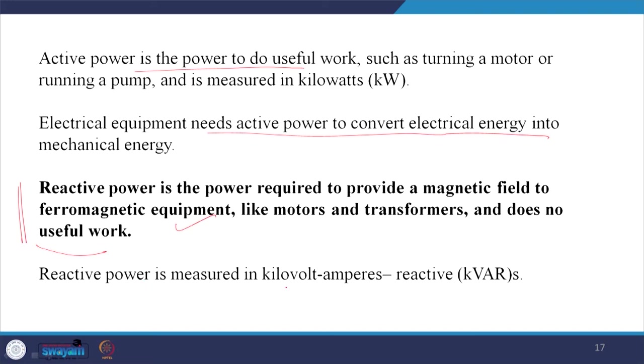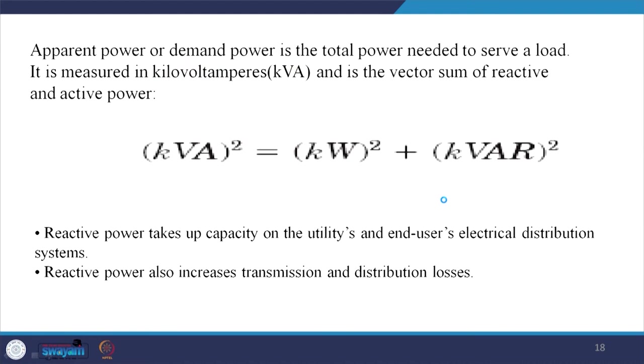Reactive power is measured in kilovolt-ampere reactive (kVAR). Apparent power — the total power needed to serve a load — is measured in kilovolt-amperes (kVA) and is the vector sum: kVA² = kW² + kVAR². Reactive power takes up capacity of the utility and the user's electrical distribution system. It also increases transmission and distribution losses because, for the same kVA rating of a transformer, lower power factor means more current must be supplied to meet the demand, and all losses related to current will increase.